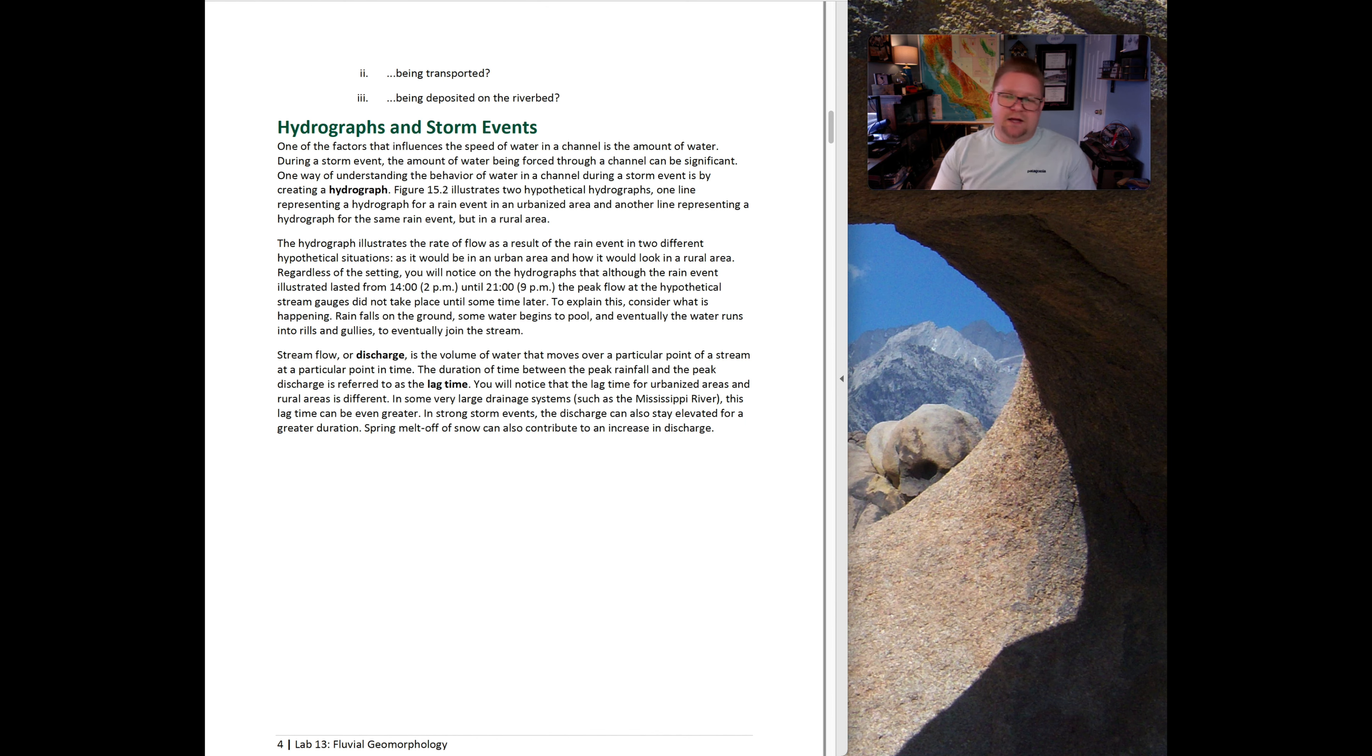Stream flow is otherwise known as discharge, which is the volume of water moving over a particular point in a stream at a particular time. Discharge is calculated as Q equals the area times the velocity of that stream. Another term is the duration of time between the peak rainfall and the peak discharge, that's called the lag time. As an example, I always compare it to a bucket. If I'm out in the driveway with a big bucket and I dump that bucket and slide it down the driveway, the time from when I discharge that water to when we have the peak discharge, that nice little curve, that's called the lag time.